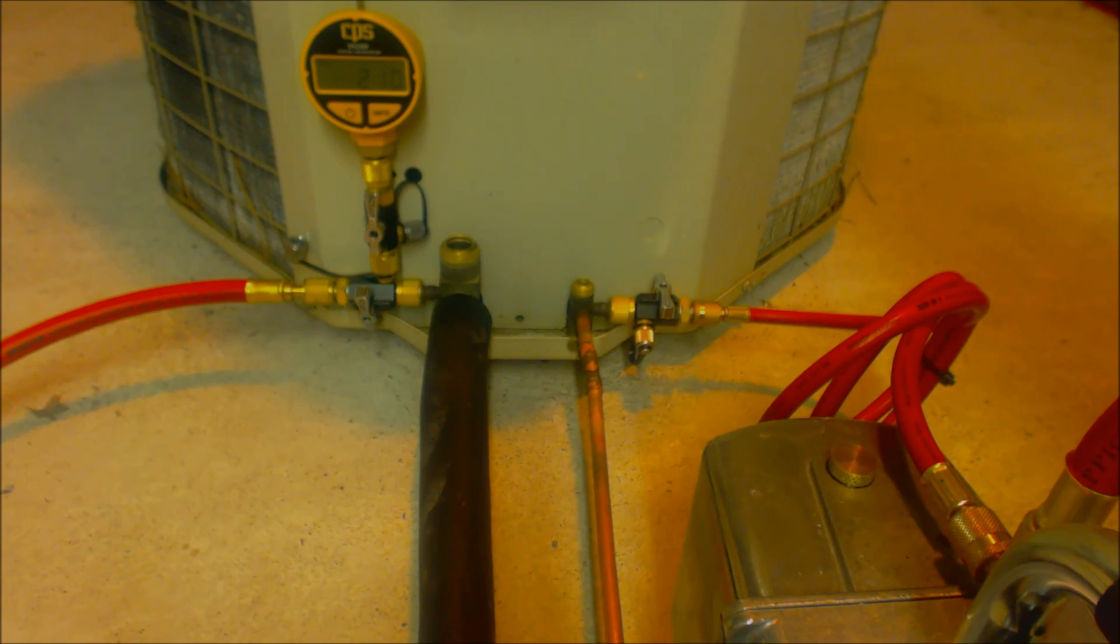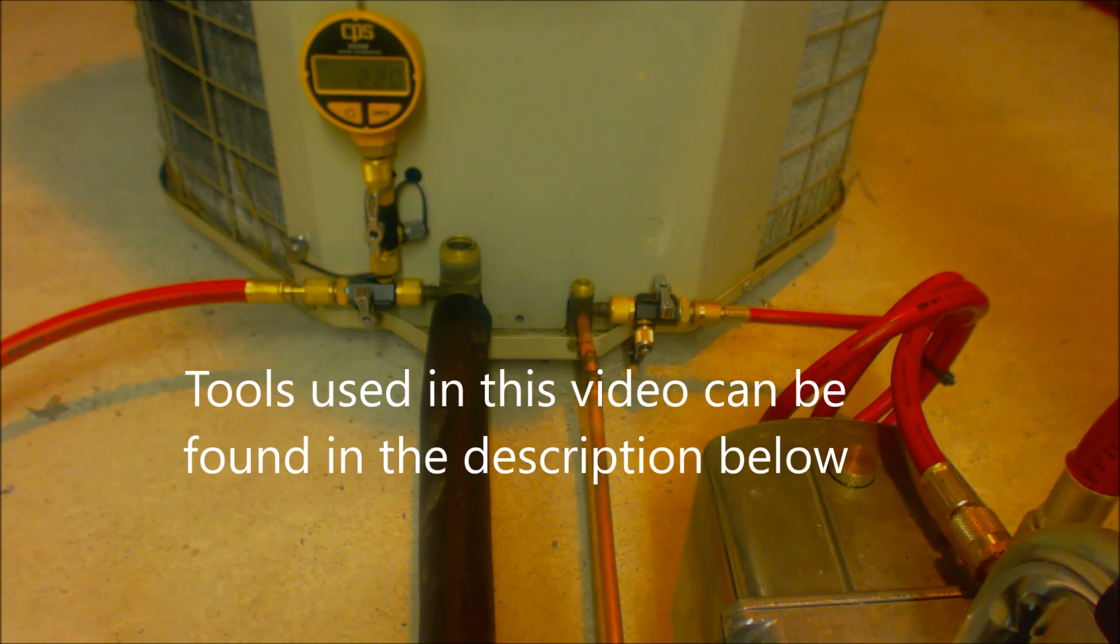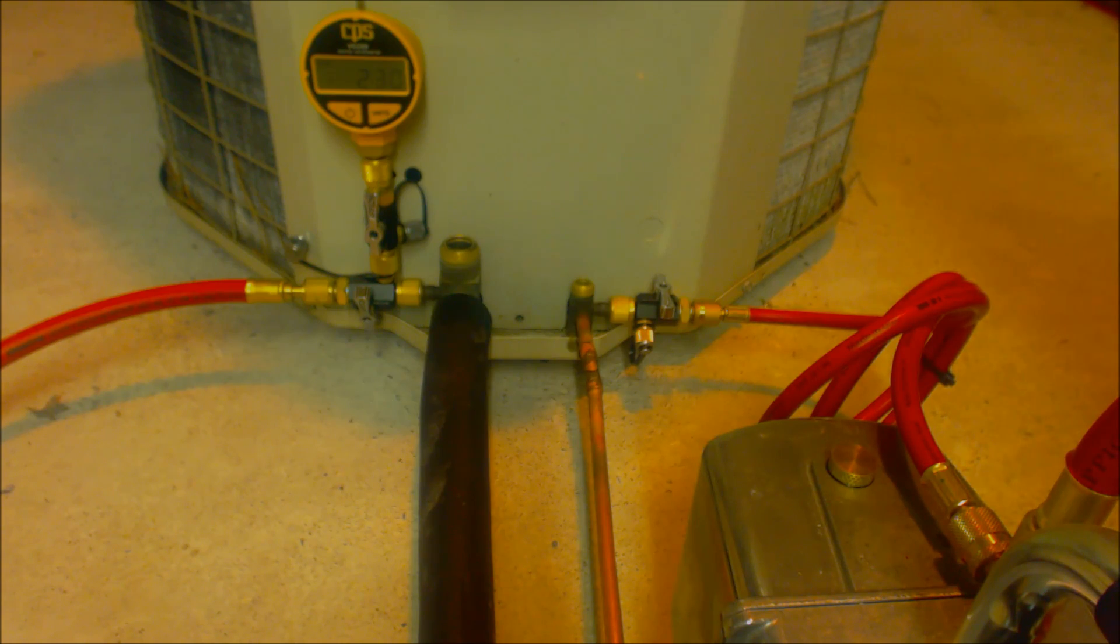If the micron level goes all the way up to a number that it can't read, then that's a definite indication that you have a leak. I usually pull my vacuums down to 200 or 300 microns and then make sure that they don't rise up above 500.